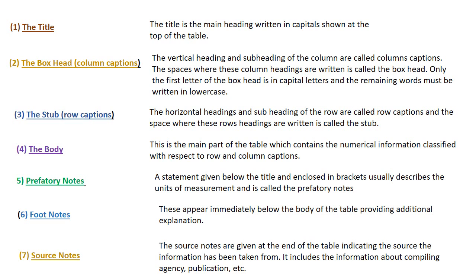The title is the main heading written in capitals shown at the top of the table. It gives an impression about what we are going to discuss. The second part is the box head, which is the column caption. The vertical headings and sub-headings of the columns are called column captions. The space where these column headings are written is called the box head. Only the first letter of the box head is in capital letters and the remaining words must be written in lowercase.